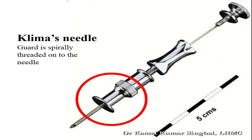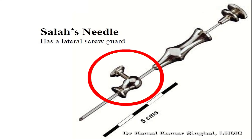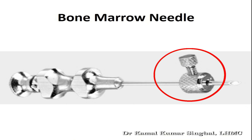This is the Klima's needle, where the guard is spirally threaded onto the needle. And this is the Salah's needle, where there is a lateral screw guard.